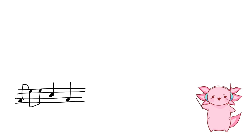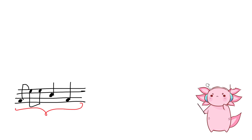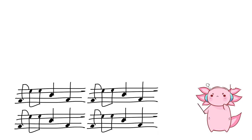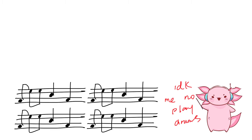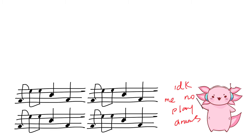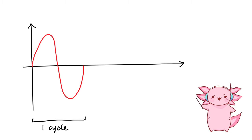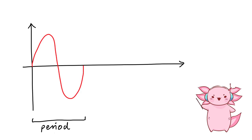You know how once a drummer figures out a pattern for 4 beats, he can repeat it for the whole song? For trigonometry, we figure out the pattern for one cycle of the trig graph, which is called a period. The one cycle just repeats itself over and over again.